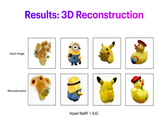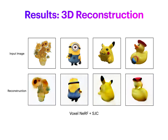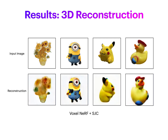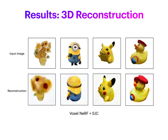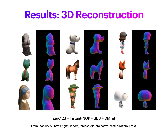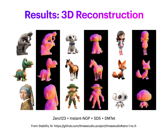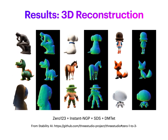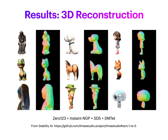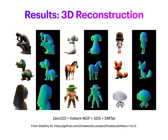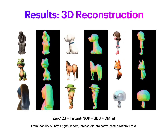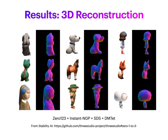Since its release, this method has brought out many applications for asset generation in both academia and industry. Many popular open source frameworks have incorporated 0123 and improved upon it. Here it shows some stunning 3D reconstruction results obtained by Stability AI — check out the implementation on the ThreeStudio GitHub repo.